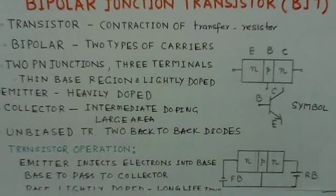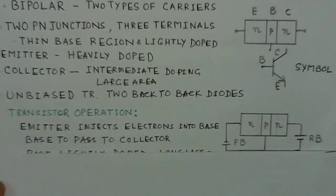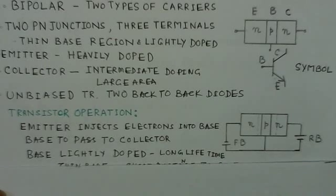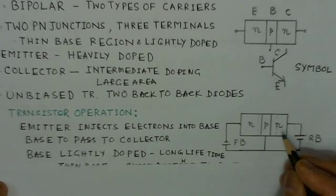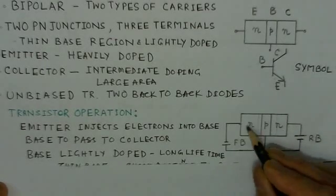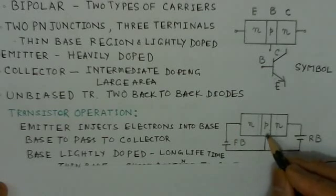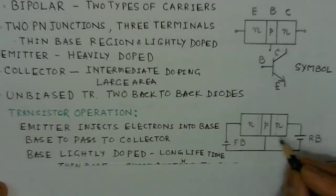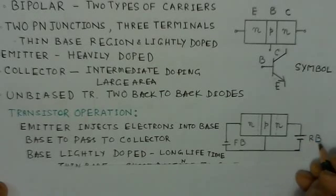Now if we see the transistor operation, for the active mode of operation of a transistor, the emitter-base junction is forward biased and collector-base junction is reverse biased.